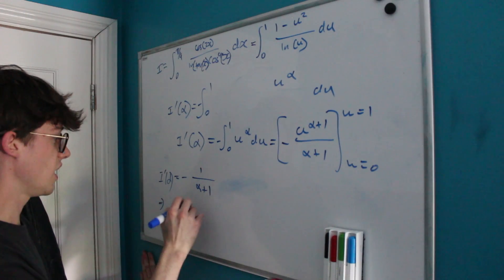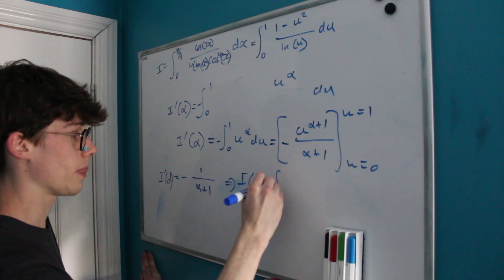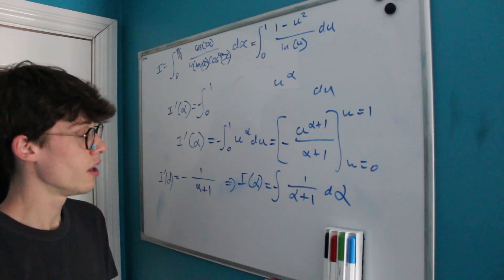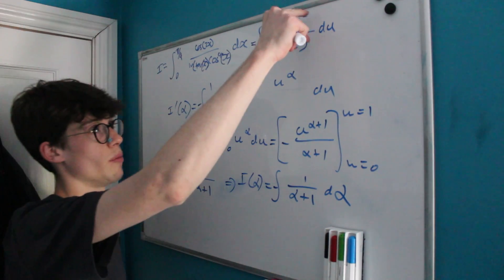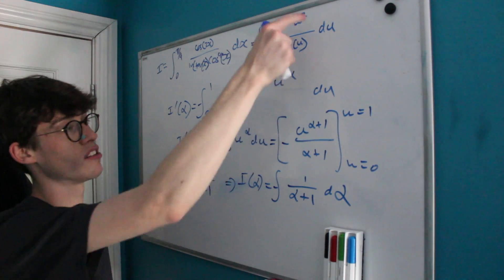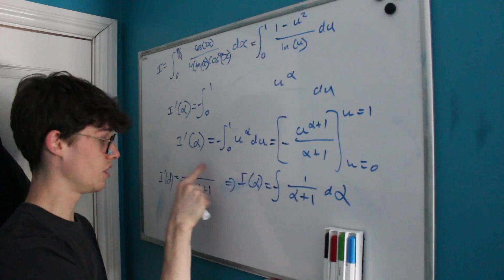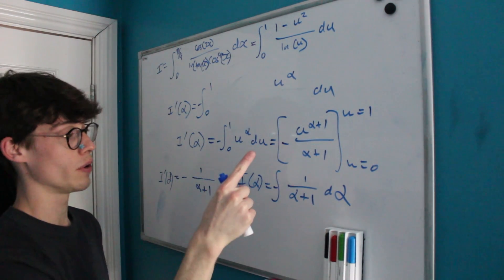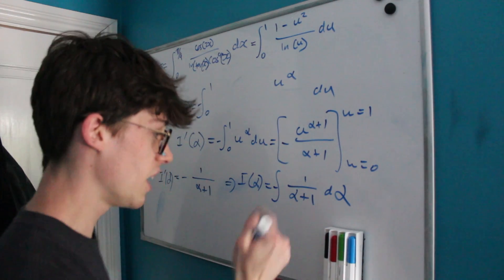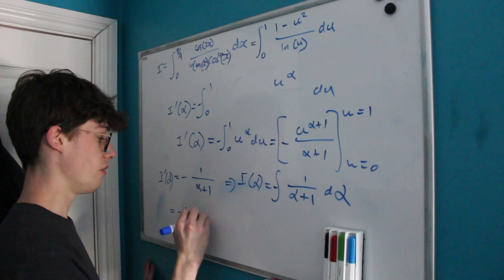Since I'(α) = -1/(α+1), it means I(α) must equal the integral of -1/(α+1) with respect to α. This is how Feynman's trick works: we introduce a parameter α to simplify a messy integral into an easy one, differentiate to get I'(α), then integrate back with respect to α to find I(α). This easy integral gives us I(α) = -ln|α+1| plus a constant C.